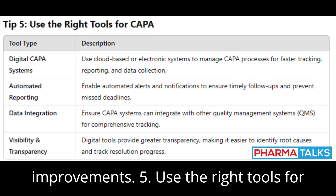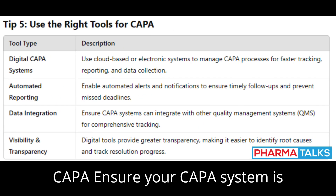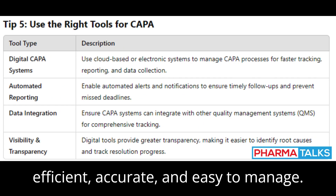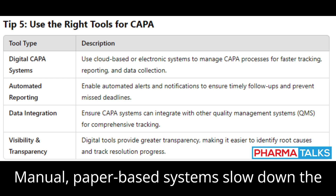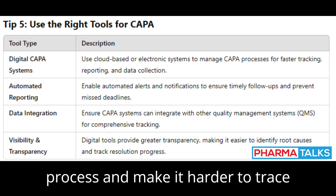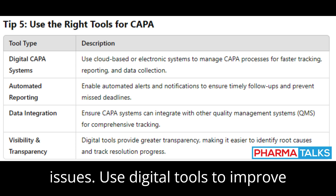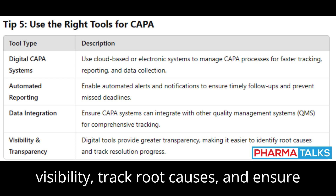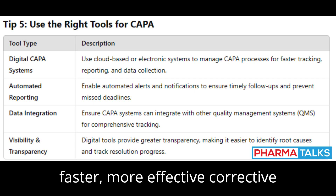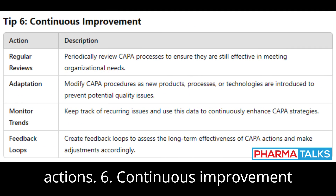Tip 5: Use the Right Tools for CAPA. Ensure your CAPA system is efficient, accurate, and easy to manage. Manual, paper-based systems slow down the process and make it harder to trace issues. Use digital tools to improve visibility, track root causes, and ensure faster, more effective corrective actions.